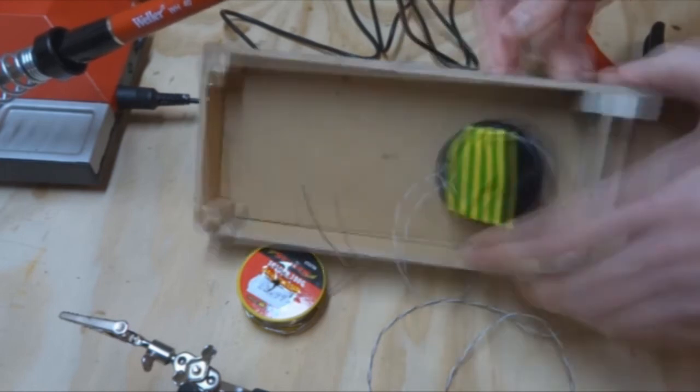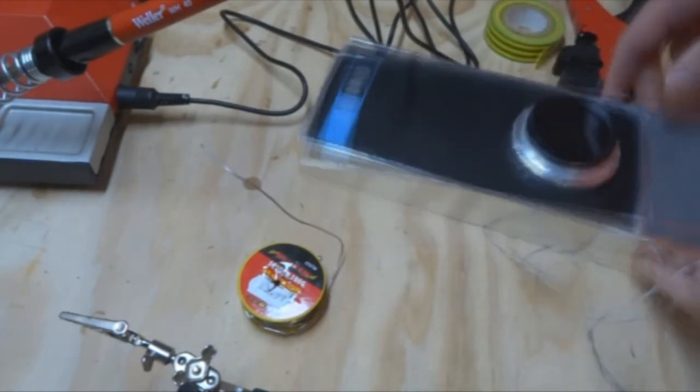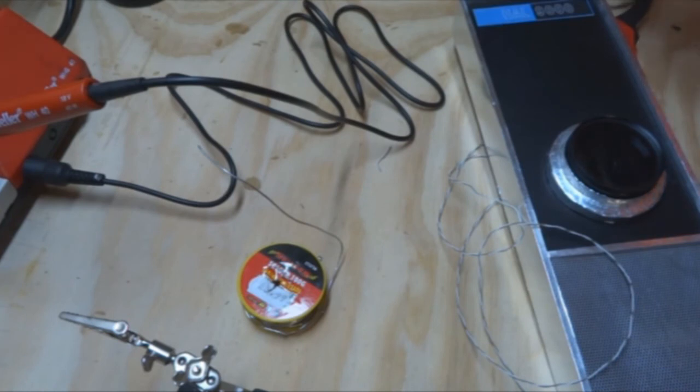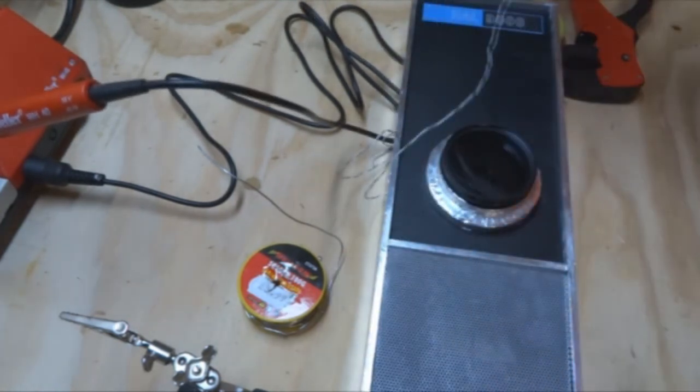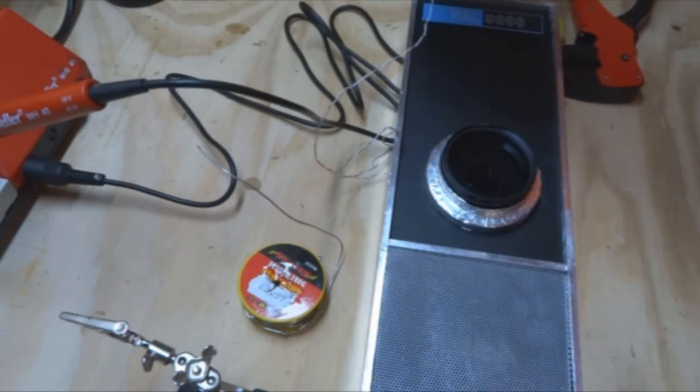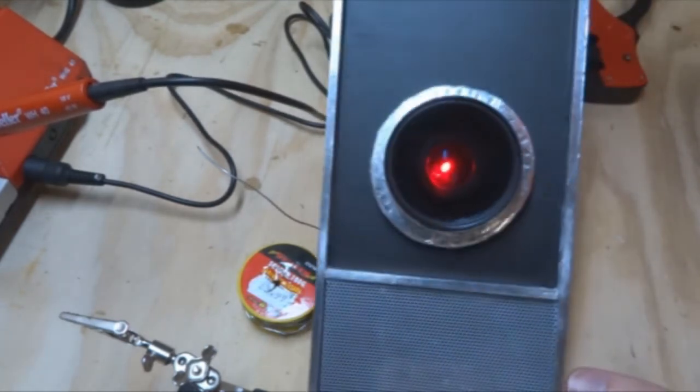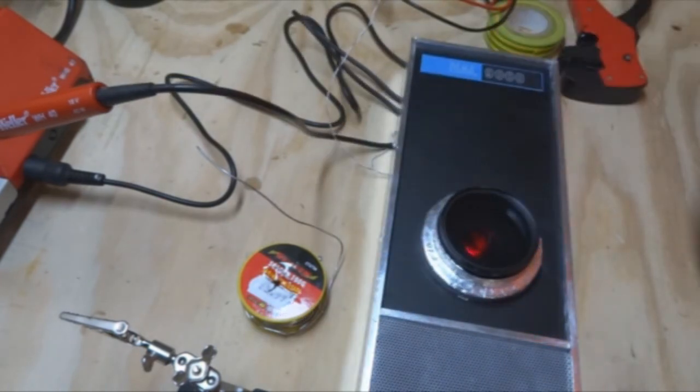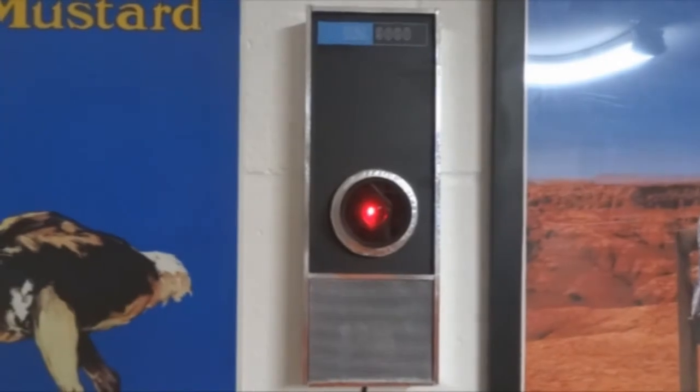So, that's just insulating that up. And then, we're just going to bring in the bench power supply for a test. So, this is just set to 5 volts. Clip the leads on. And this should start glowing red in a minute. There we go, that's glowing red. And you can see how much it looks like the lens in the movie, even though it isn't the classic fisheye lens they used.